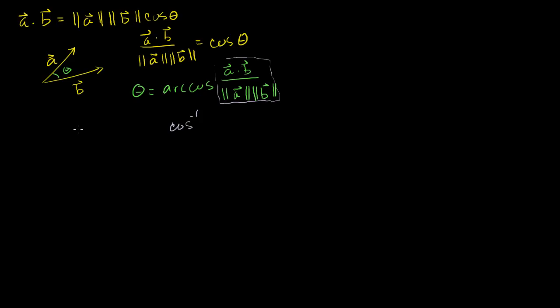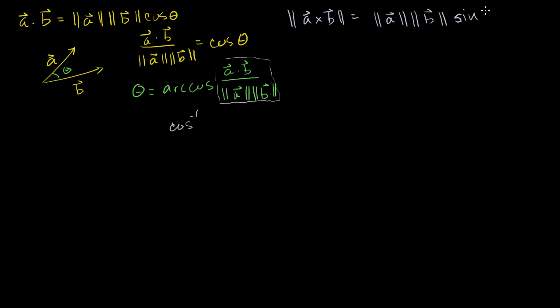You can start addressing issues of perpendicularity and whatever else. This was a bit of a tangent, but the other outcome I painstakingly proved in the previous video was that the length of the cross product of two vectors is equal to a very similar expression: the length of a times the length of b times the sine of the angle between them — the same angle.